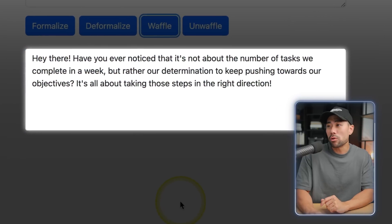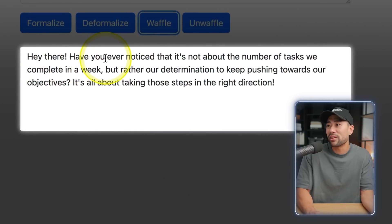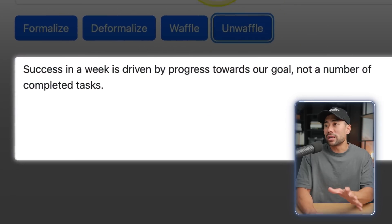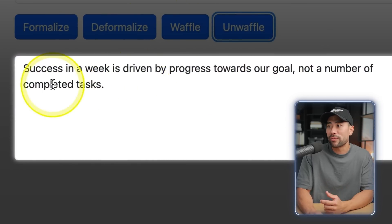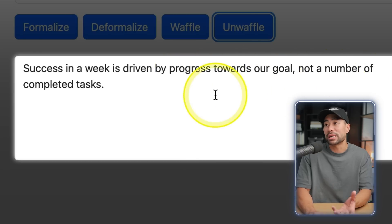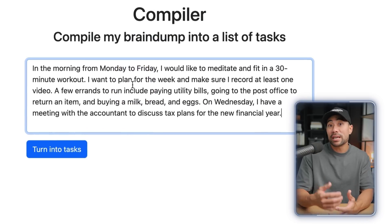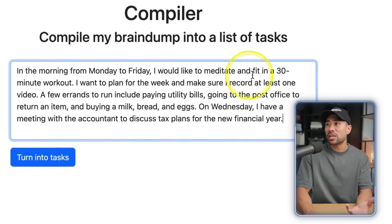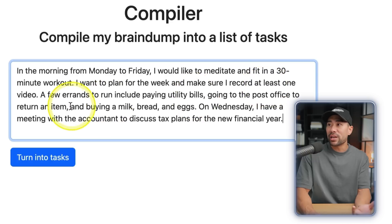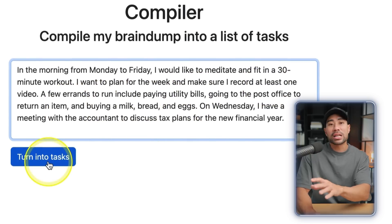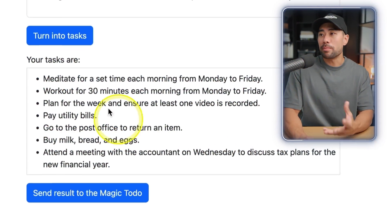Adding waffle makes it more casual: 'Hey there, have you ever noticed that it's not about the number of tasks we complete in a week.' Unwaffling summarizes it to: 'Success in a week is driven by progress towards our goal, not the number of completed tasks.' Next is the Compiler tool, where you brain dump and type what you want to do — for example, meditate for 30 minutes Monday to Friday, record at least one video, and run a few errands. Click turn into tasks and it breaks everything down into to-dos.